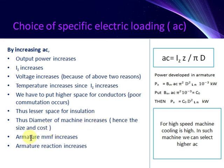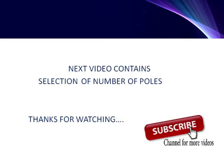Armature MMF increases and armature reaction increases. For high speed machines, cooling is high, and in such machines we can select higher AC. The next video contains selection of number of poles. Thanks for watching, subscribe for more videos.